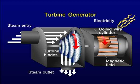Stator. The stator is the stationary part of the generator. It is made up of a core with slots that hold the stator windings. These windings are connected in a specific arrangement to produce the desired output voltage and frequency.